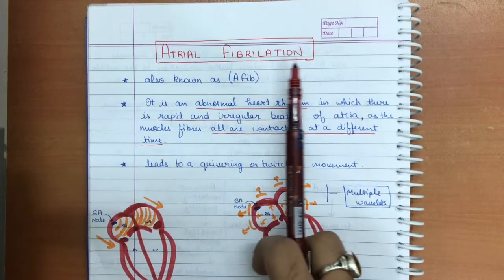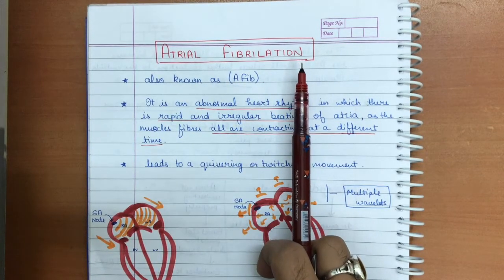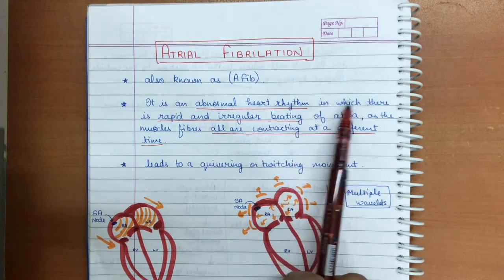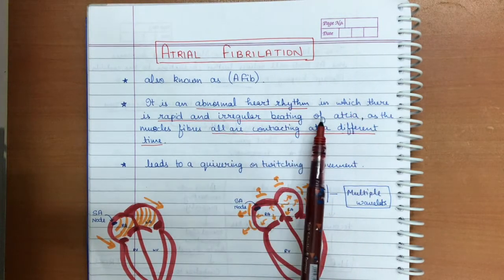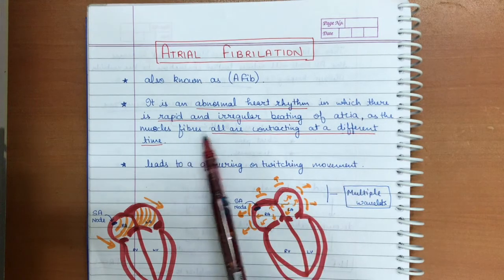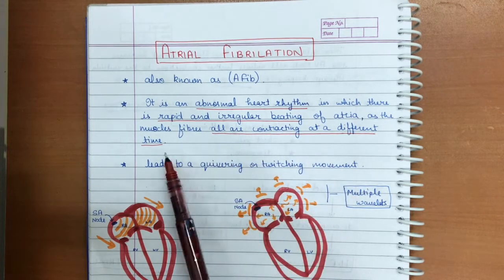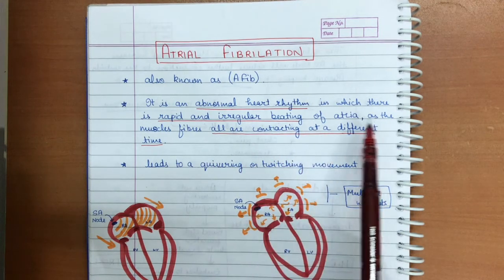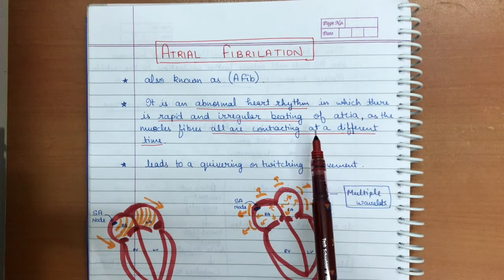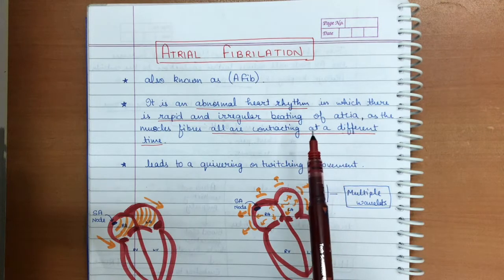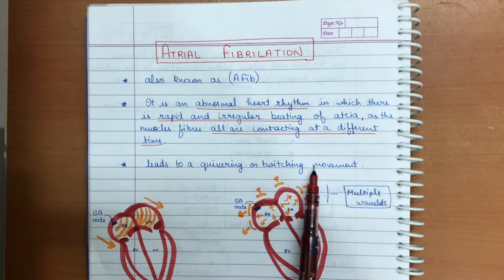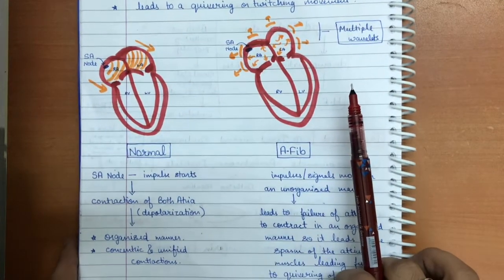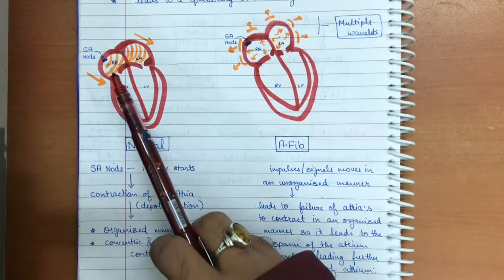We are going to discuss atrial fibrillation, also known as AFib. It is an abnormal heart rhythm in which there is rapid and irregular beating of the atria, as the muscle fibers are all contracting at different times. With no single focus for atrial contraction, this leads to a quivering or twitching movement of the atria.